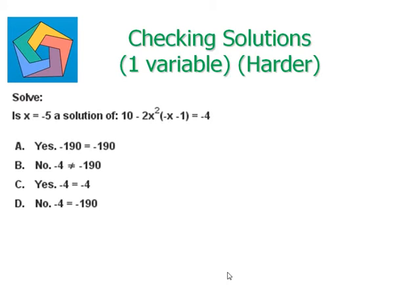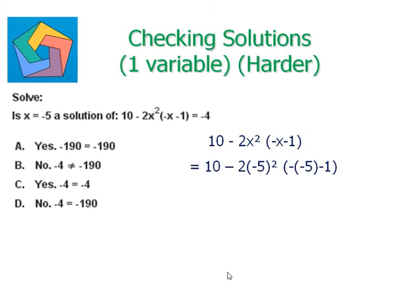Writing the LHS we have 10 minus 2x times open bracket negative x minus 1 close bracket. Now plugging in the value of x equals negative 5 in this expression, we get 10 minus 2 times negative 5 whole square, times open bracket negative of negative 5 minus 1 close bracket.